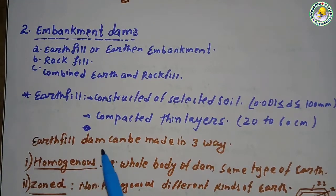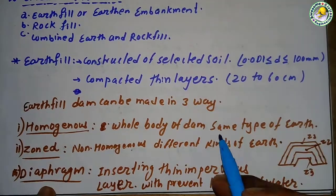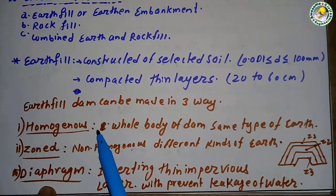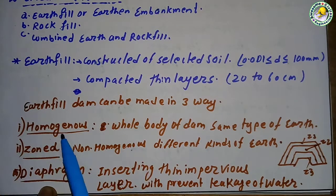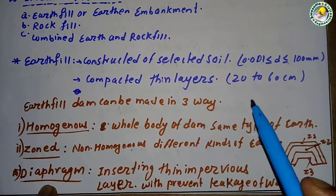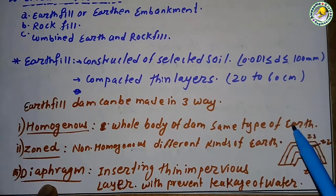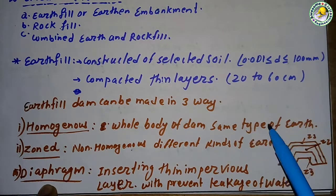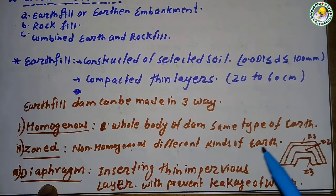Earth fill dams can be constructed in three ways: homogeneous method, zoned method, and diaphragm method. In the homogeneous method, the whole body of the dam is made up of the same type of earth — different types of soil are not mixed. In the zoned method, different kinds of earth are mixed.